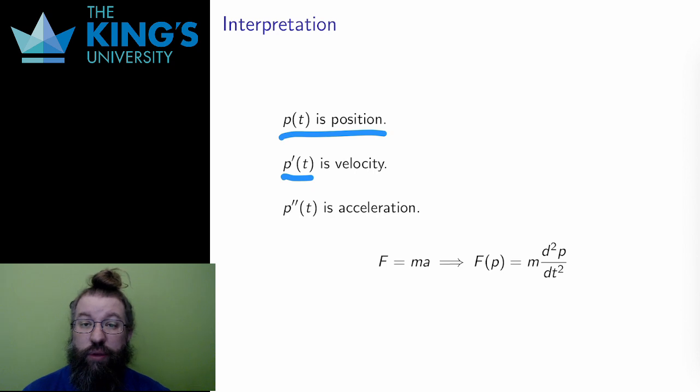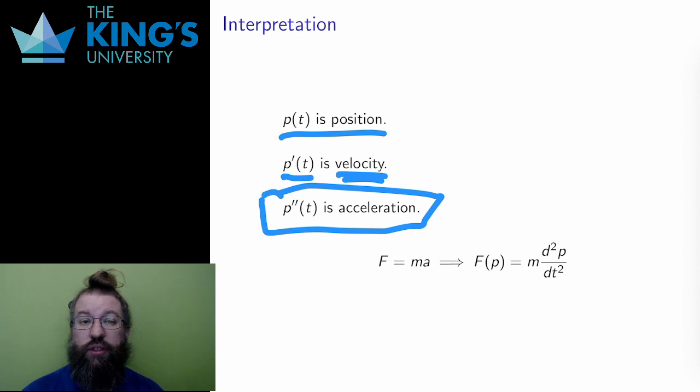The second derivative is the rate of change of this new function, the first derivative. It's how velocity changes. Well, we have a word for that. Acceleration is changing velocity. So, the second derivative of position is acceleration, the rate of change of the rate of change.